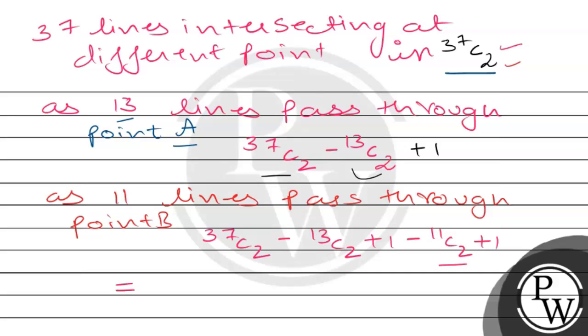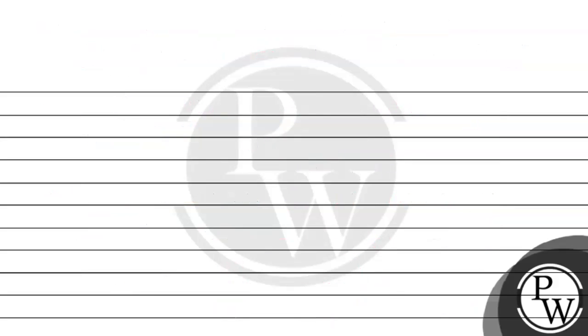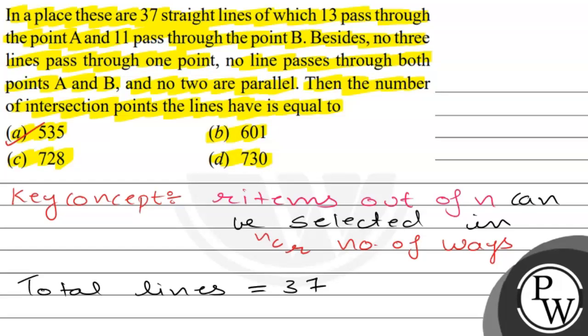So we have 37C2 minus 13C2 plus 1 minus 11C2 plus 1. This equals 37×36/2 minus 13×12/2 plus 1 minus 11×10/2 plus 1. This is equal to 666 minus 78 plus 1 minus 55 plus 1, which equals 535. So option A is the correct option.